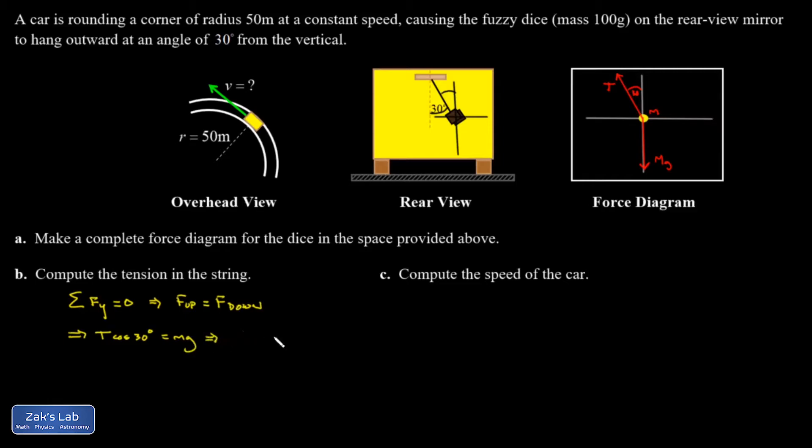So I can quickly find the tension here. It's mg over cosine 30 degrees. And we'll plug some numbers in. That's 0.1 kilograms for the mass. 9.8 meters per second squared.